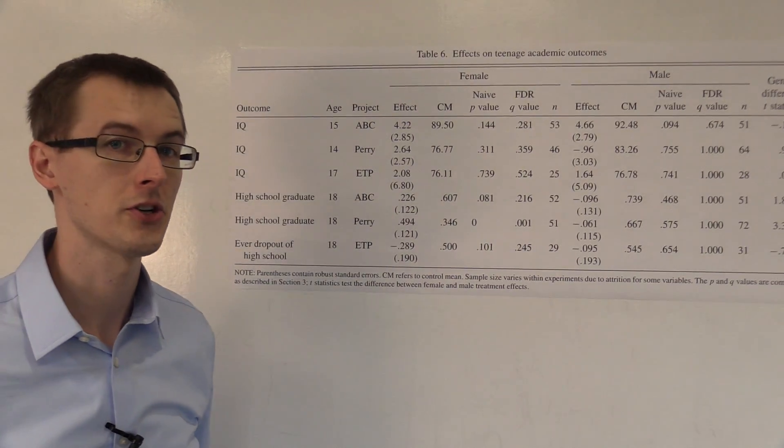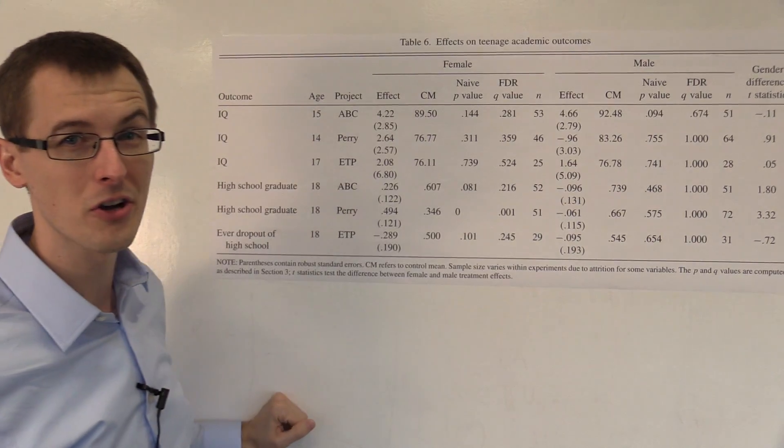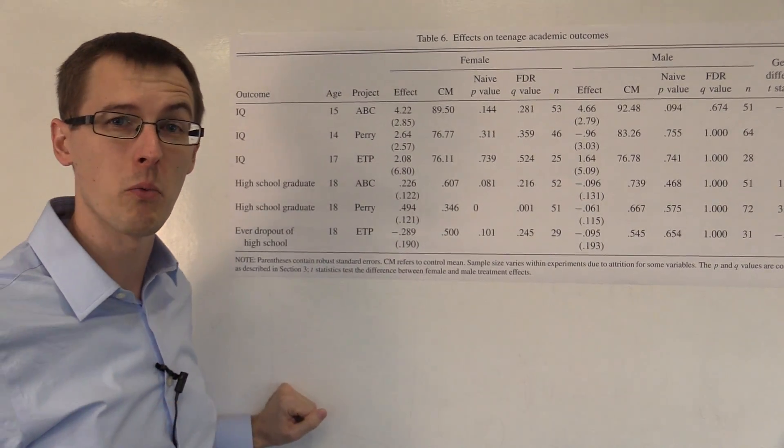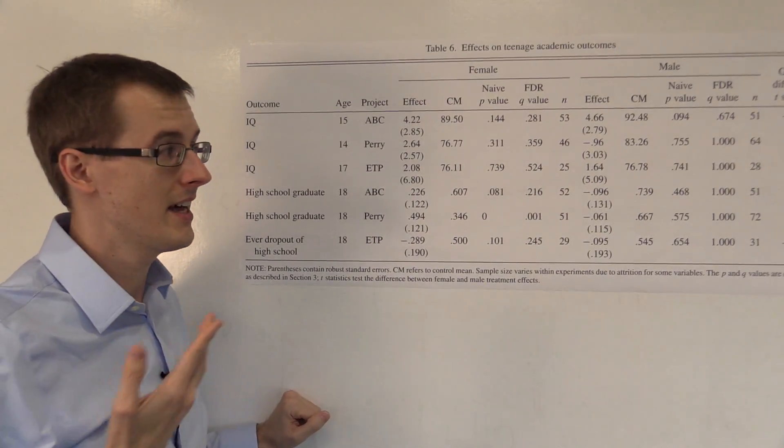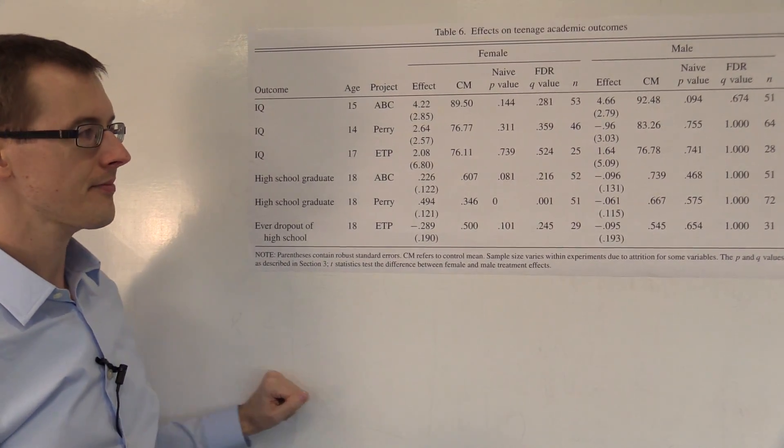Let's look at the conditional average treatment effect: that's minus 6.1%. So that makes it look like going to preschool actually made it worse for males, that it lowered the amount of people who are graduating from high school.